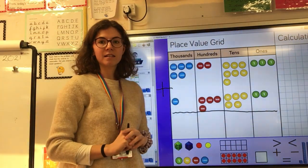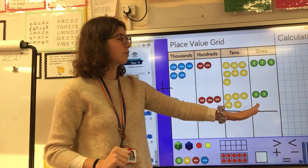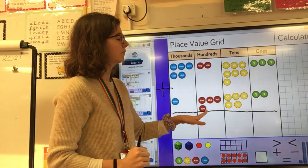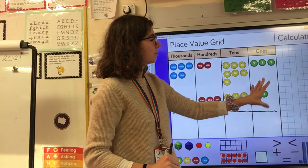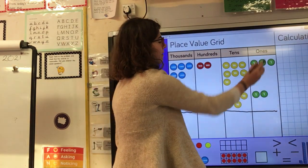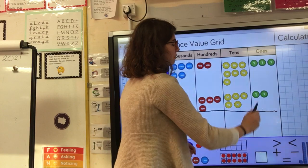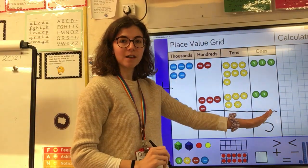Just like I did last time I'm going to start with my ones digits. I'm going to start with the ones column because that's got the lowest place value in this calculation. I've got three ones add two ones. One, two, three, four, five ones all together. I've got five ones. So I'm going to write five underneath.